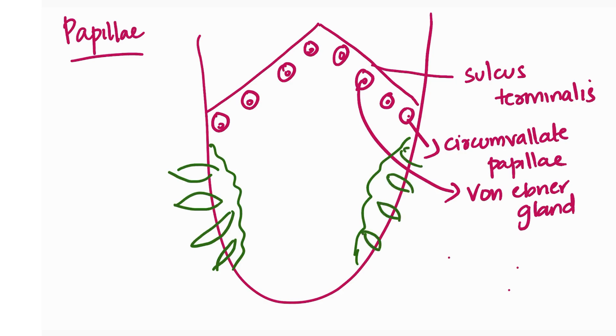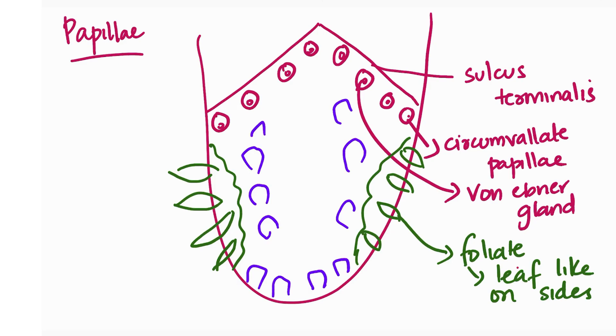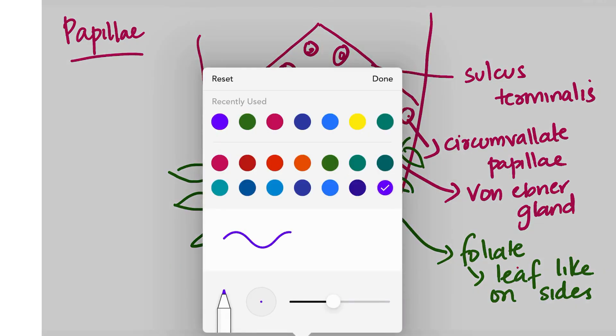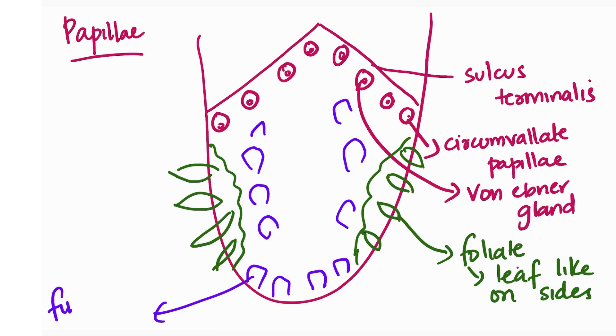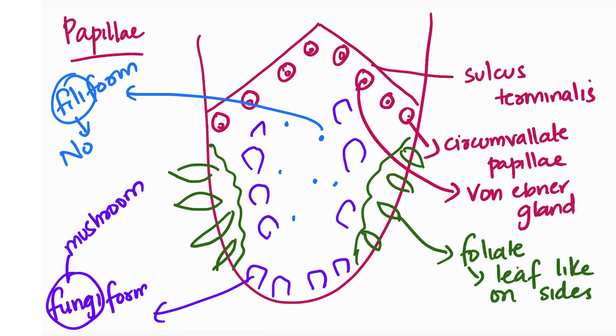Next is foliate papillae, present like leaves on the sides of the tongue. Then comes fungiform - mushroom shaped papillae with less taste buds. Foliate also has less taste buds. Then comes filiform - it doesn't have any taste buds. It's kind of like a filler but no use. It's numerous but has no taste buds.